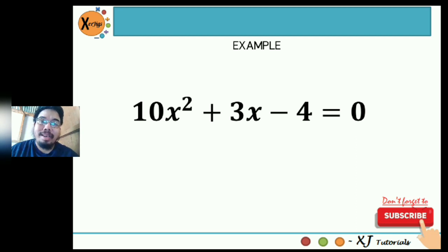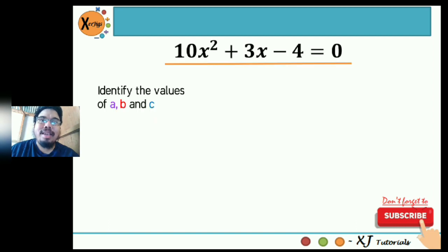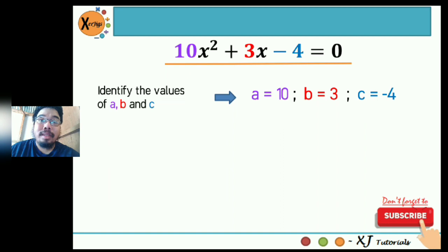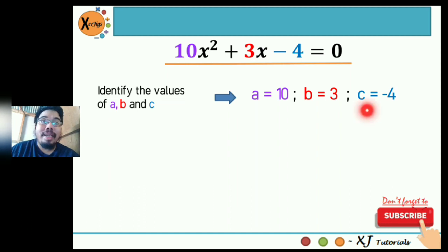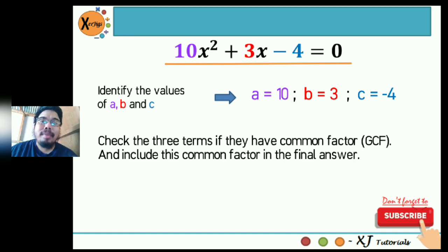The first thing that we need to do is to identify the values of a, b, and c. The value of our a is positive 10, beside x squared. Next is our linear term — the value of b is positive 3. And our c is the constant term, which is negative 4.